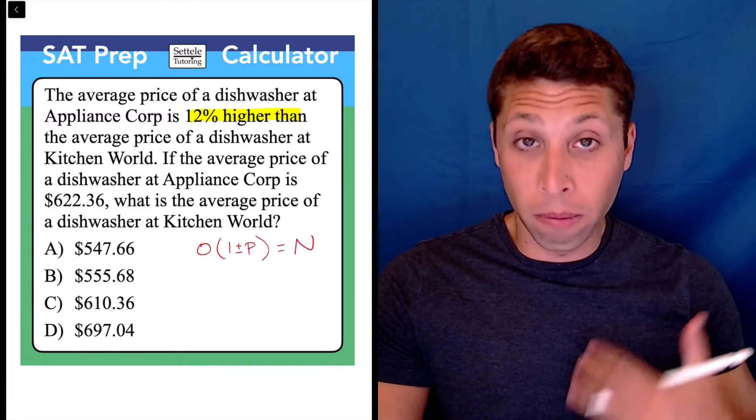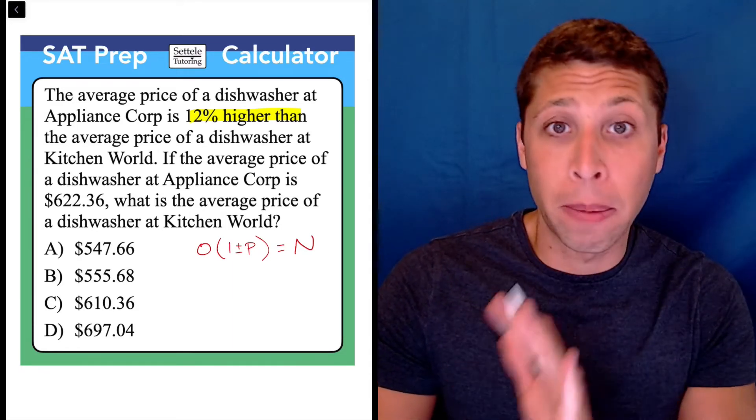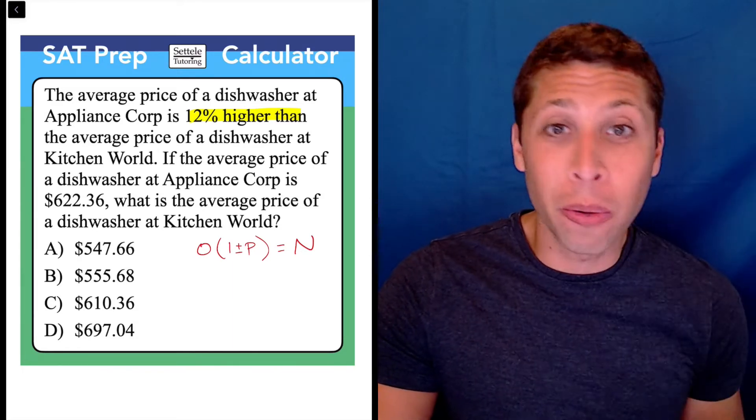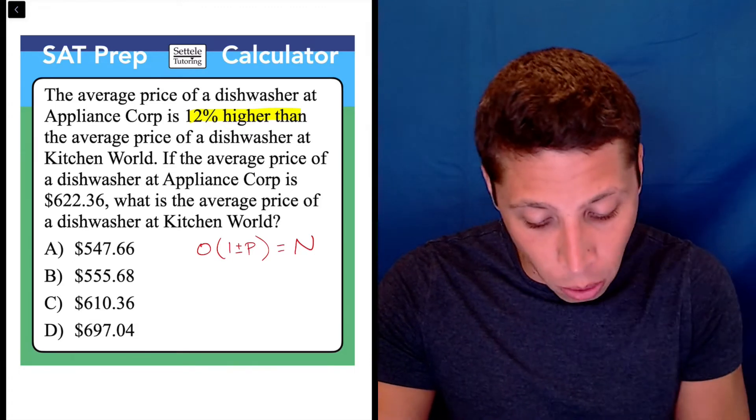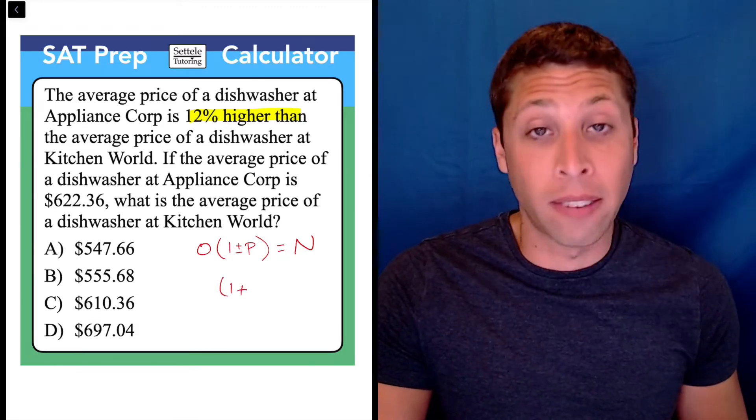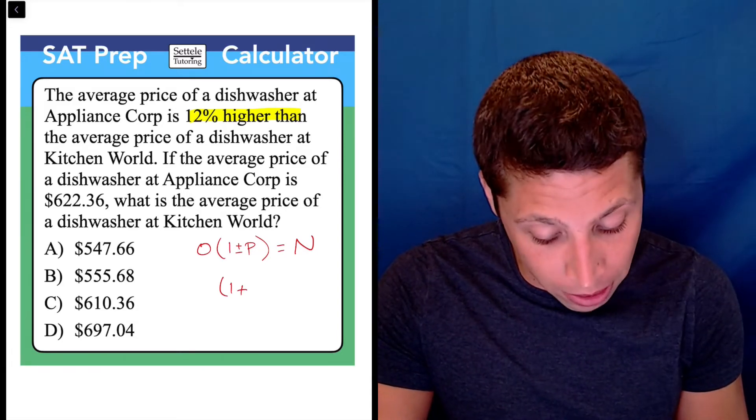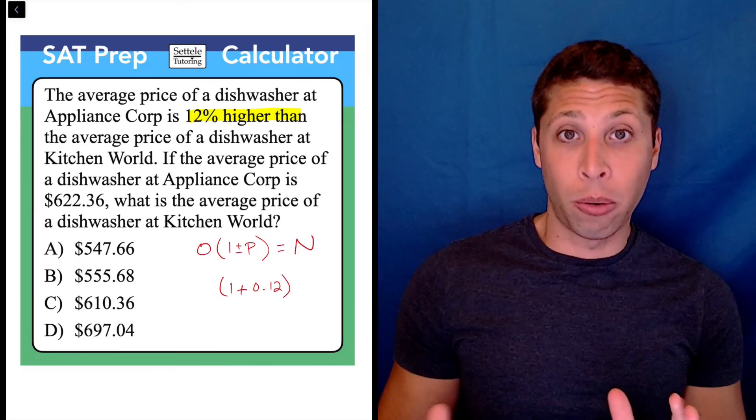The percentage part is easy. They tell us it's 12% higher. The best part about this formula is it's very intuitive as far as the percentage goes. We just want to represent the increase with a plus instead of a minus, and then the p, we have to write the percentage as a decimal, so that's going to be 0.12. That's very intuitive.